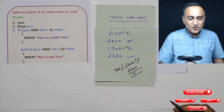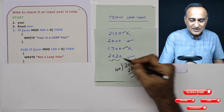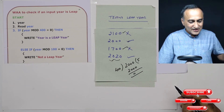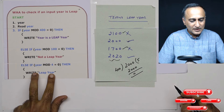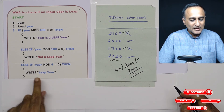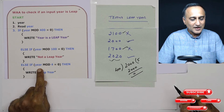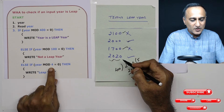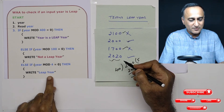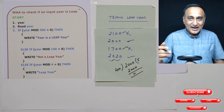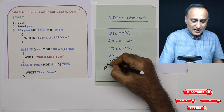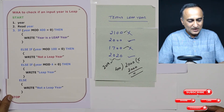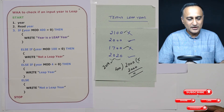Now I am left with only non-century years. So what I am going to do is ask: is year mod 4 equal to zero? If so, then I'm going to say write leap year. For example, 2020 divided by four gives a remainder of zero, so I straight away say leap year. And last, any other year like 2019 should say not a leap year — so the final else statement says not a leap year.